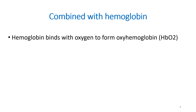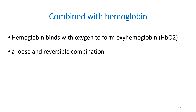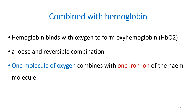When combined with hemoglobin, hemoglobin binds with oxygen to form oxyhemoglobin. It is a loose and reversible combination. The significance of this is that because it is loose and reversible, it can be released easily at the tissue level. One molecule of oxygen combines with one iron atom of the heme molecule.